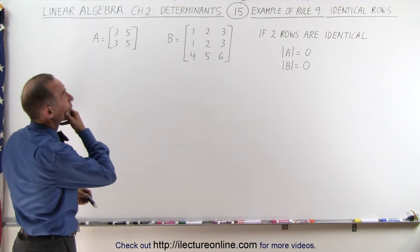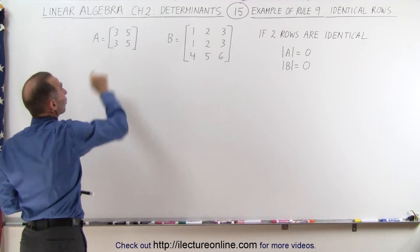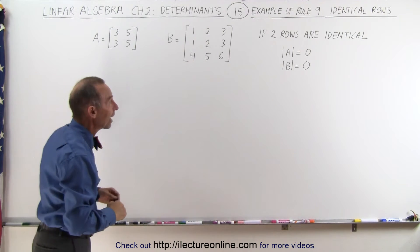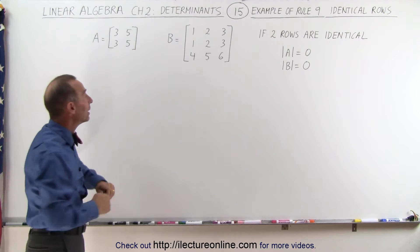Now what we're going to do first is, you can see here that we have two rows that are identical. Let's take the determinant of that matrix A and see if that determinant is indeed equal to zero.